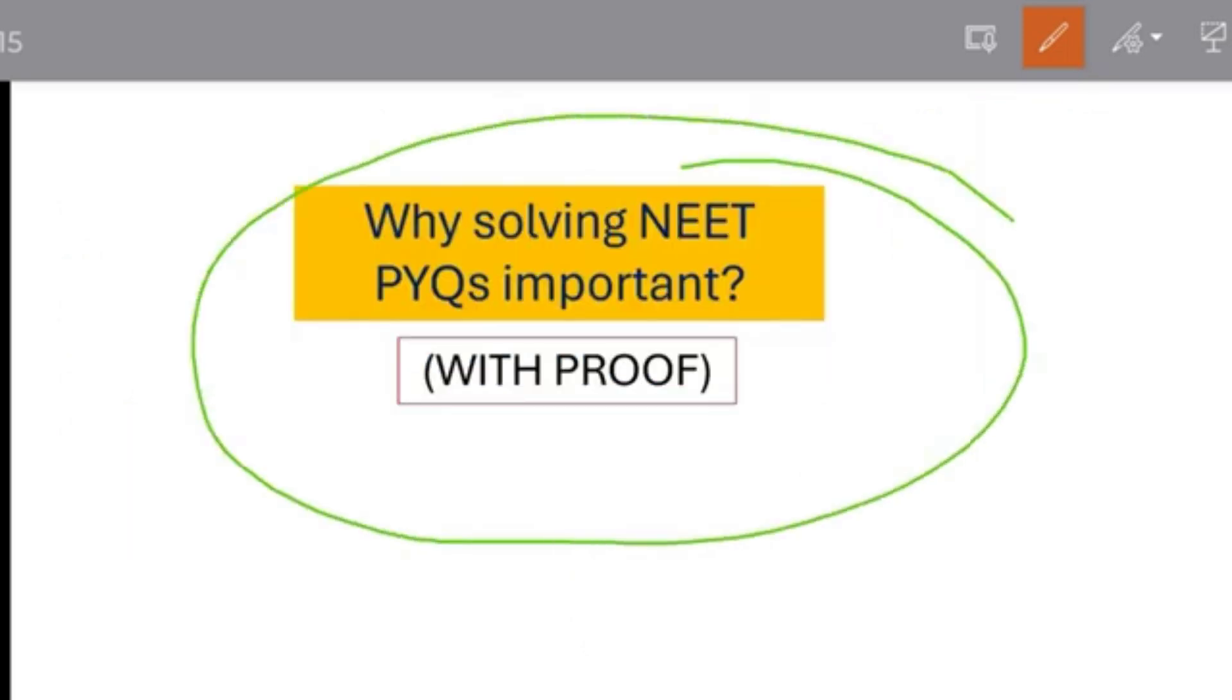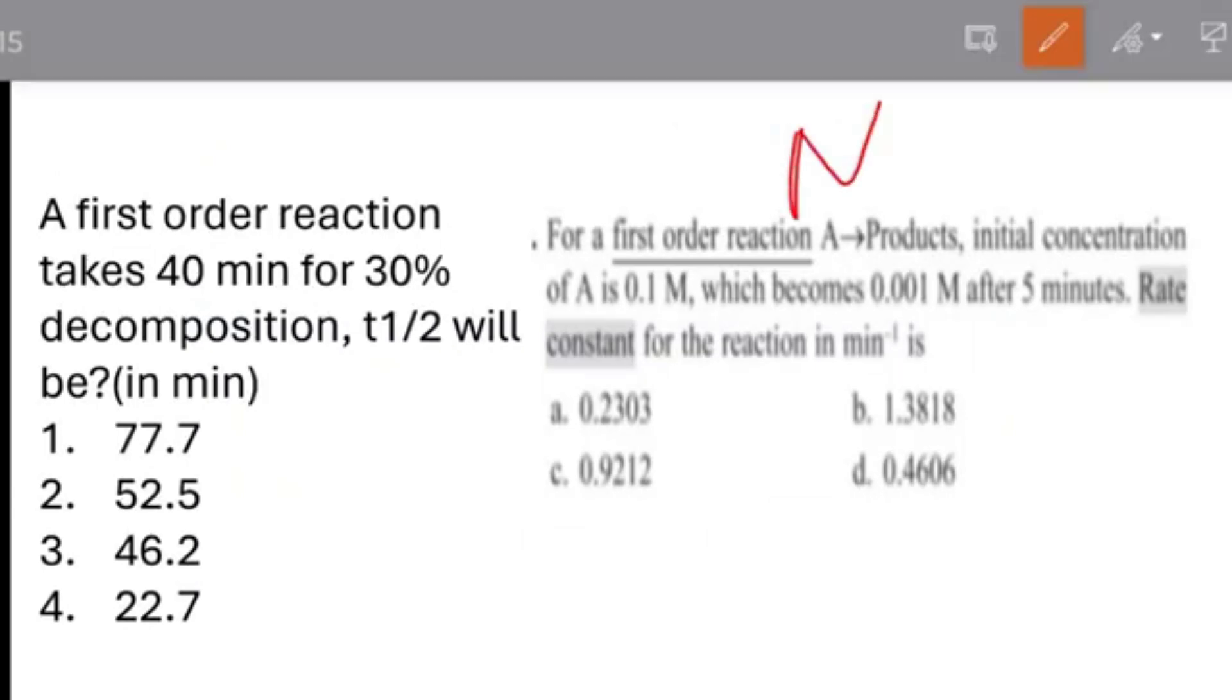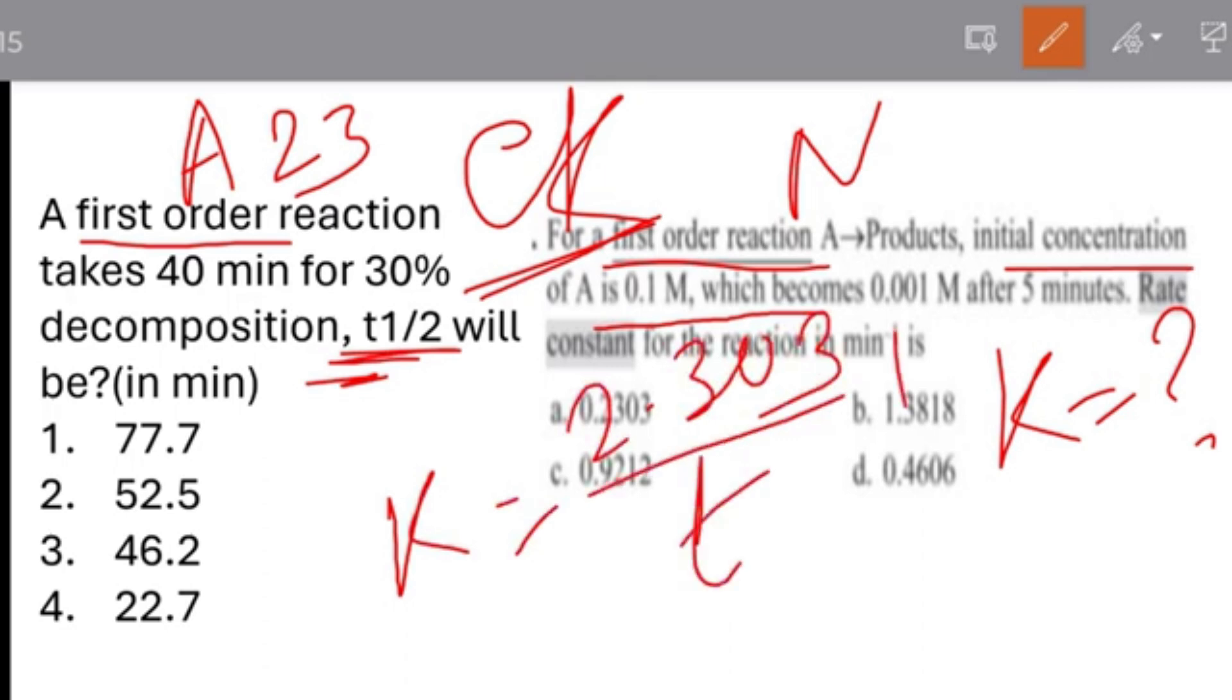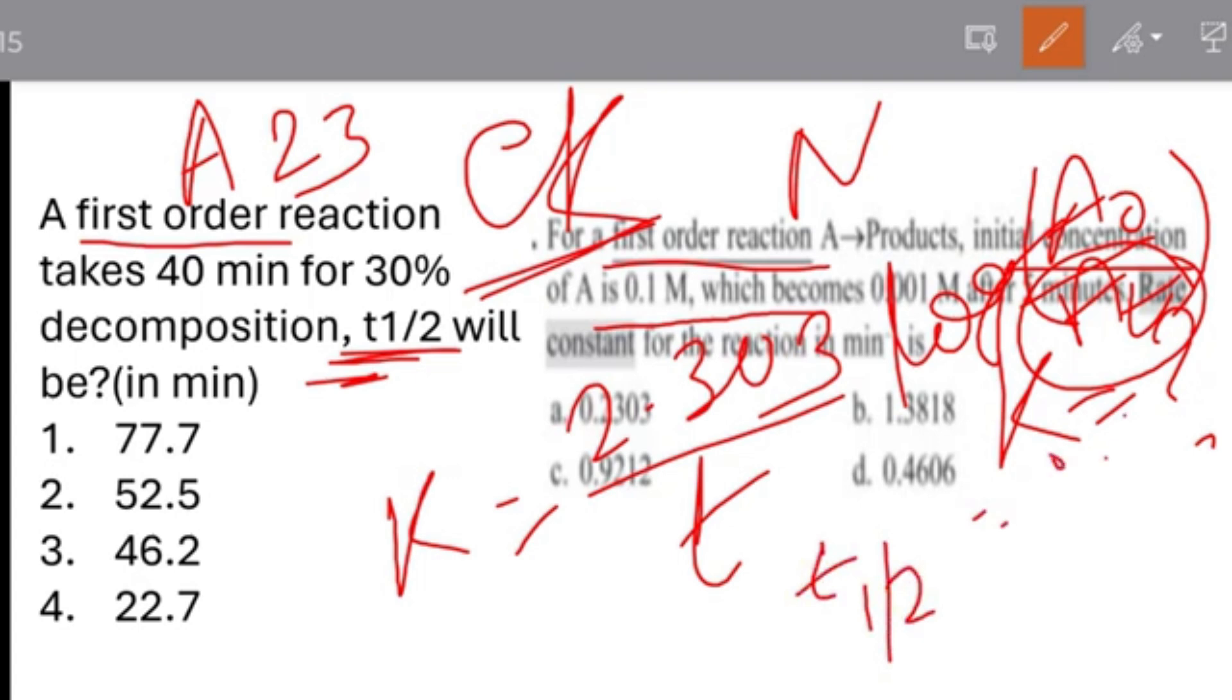Why solving NEET PYQs are important? Yes, I am showing you the proof. See, this is the question of NEET and this is the question of AIIMS BSc Nursing 2023. See the question. This is the first order reaction. A question from chemical kinetics. And here the question in AIIMS BSc Nursing - first order reaction takes 40 minutes for 30% decomposition, T half will be in minutes. And here the question in NEET: initial concentration is 0.1 molar which becomes 0.001 molar after 5 minutes, rate constant for the reaction in per minute. Here the question is what is K, rate constant. And here what is T half. So the formula you all know that K equals 2.303 by T log A naught by A T. A naught means the initial concentration, A T means the final concentration. So the same kind of question. And T half equals 0.693 divided by K. A very easy question. You see the relation between two questions.